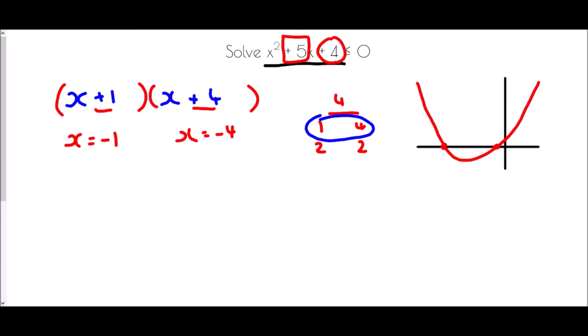That is very important for solving the inequality, because what the inequality asks is: at what point is the expression less than or equal to 0? At those two points it is exactly equal to 0. We want to know where it is less than 0 — that is happening everywhere in between, in this section between x equals negative 4 and x equals negative 1. So the solution is that x is greater than or equal to negative 4 but less than or equal to negative 1.